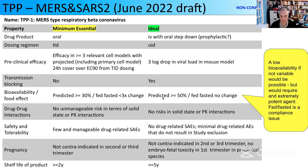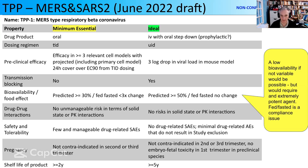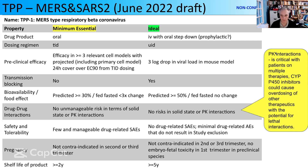We're aiming for modest to good bioavailability at a minimum. Low bioavailability in itself is not an issue unless it becomes variable — but then you need more and more potent agents. Fed and fasted state is more likely to be a compliance issue: in an emerging epidemic, you just want to tell people to take the tablets, without specifying an hour before or after meals. We're also thinking about patients on multiple therapies — particularly CYP450 inhibitors, because inhibiting CYPs could lead to overdosing of other therapeutics, potentially with lethal interactions. That's just not tolerable.